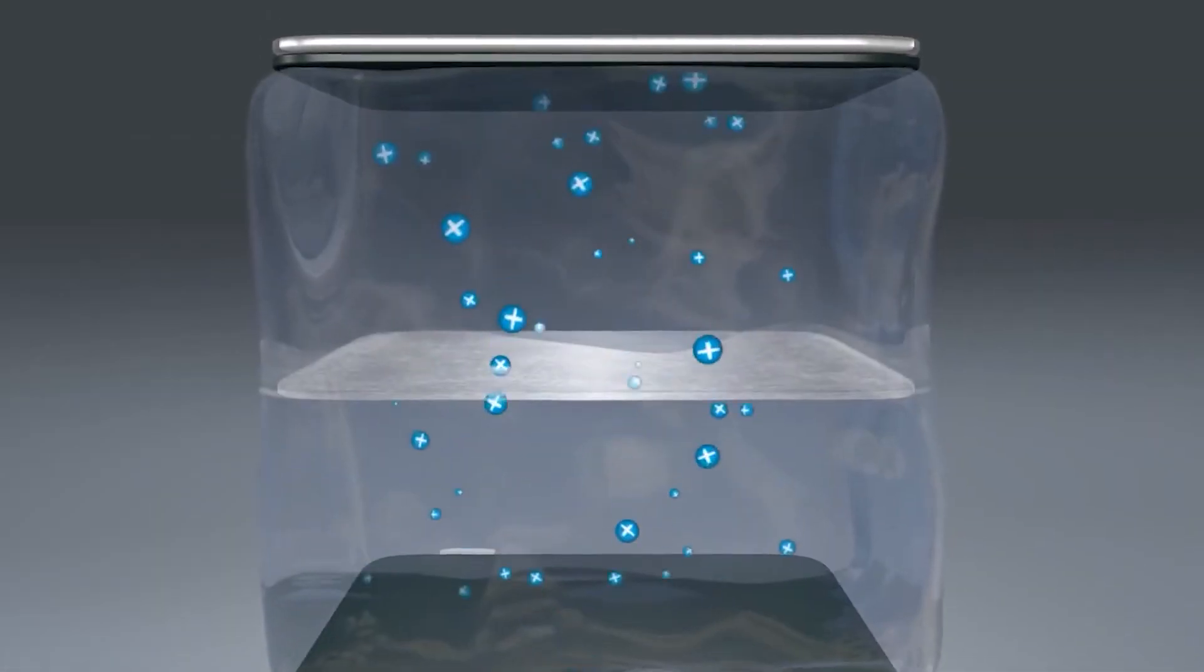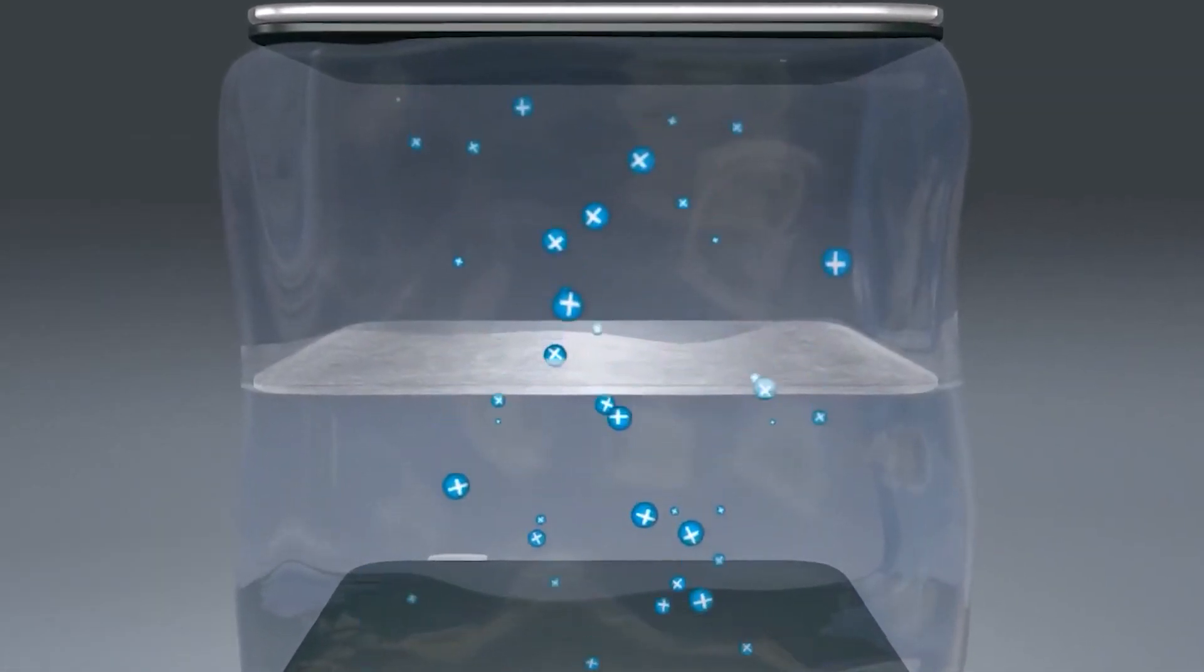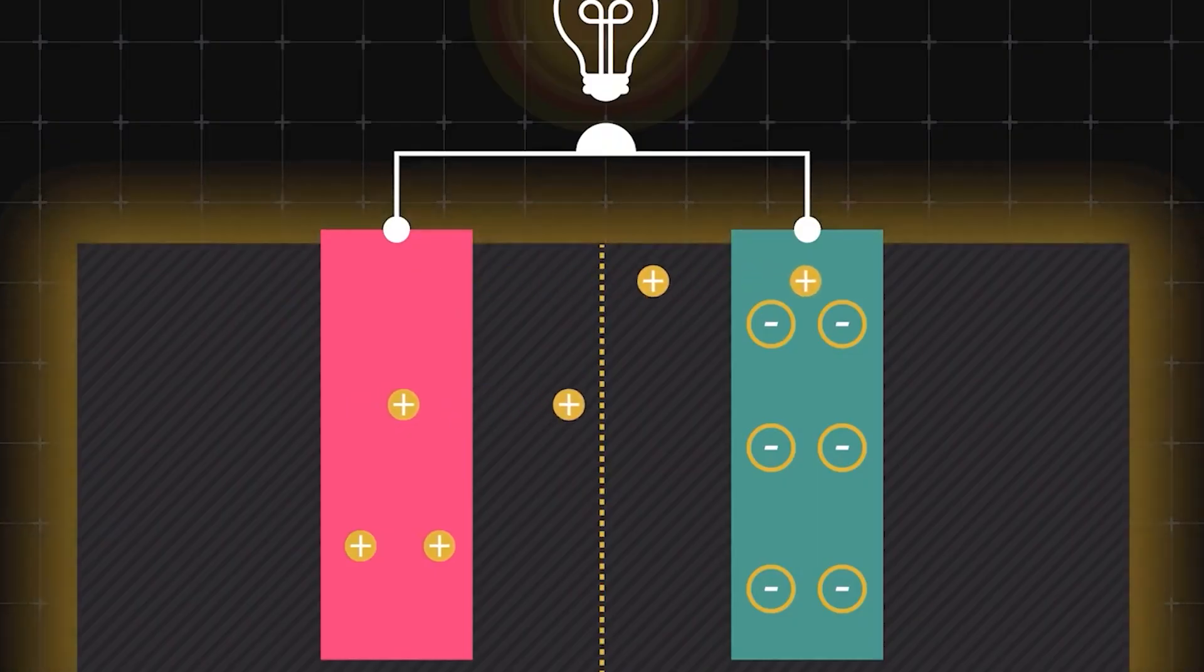Toyota intends to first use solid-state batteries in its hybrid vehicles before using them fully in its electric vehicles.